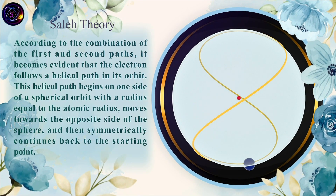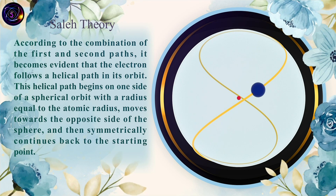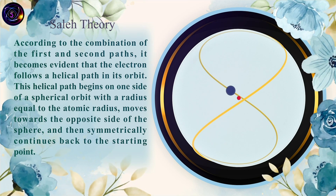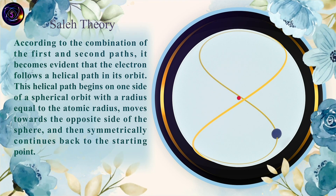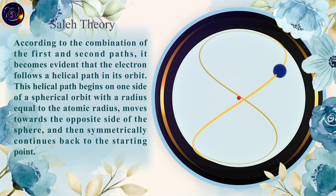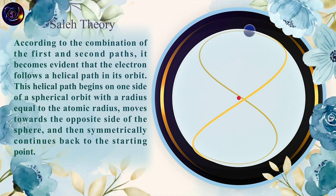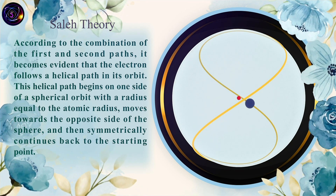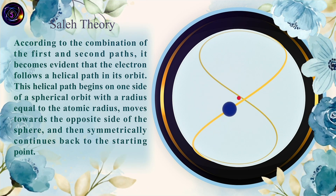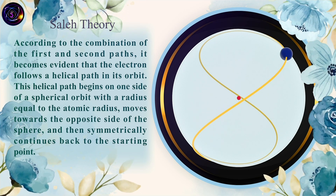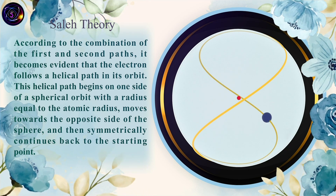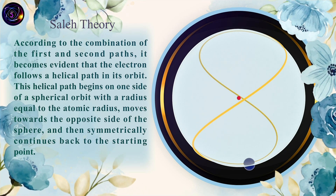According to the combination of the first and second paths, it becomes evident that the electron follows a helical path in its orbit. This helical path begins on one side of a spherical orbit with a radius equal to the atomic radius, moves towards the opposite side of the sphere, and then symmetrically continues back to the starting point.